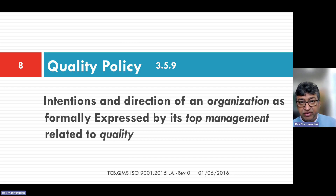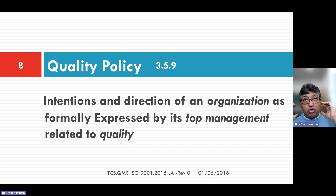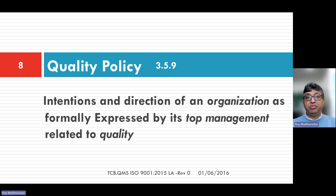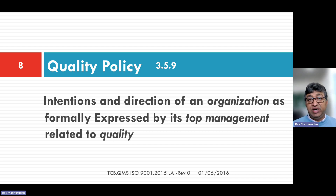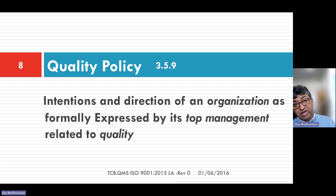The standard requires that the quality policy has certain features. It gives the overall direction of the company — where the organization's management wants to take the company with regard to quality. For example, we want to be one of the leading providers of training services in the market we operate. That's the overall intention and direction with regard to quality.